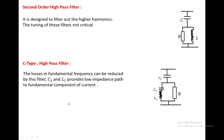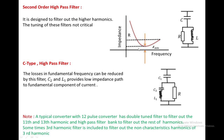Looking at the variation of impedance of these two filters versus frequency, a typical 12-pulse converter uses a double tuned filter to filter out the 11th and 13th harmonics, and a high pass filter bank to filter out the rest of the harmonics. Sometimes a third harmonic filter is also included to filter out the non-characteristic harmonics of third order.